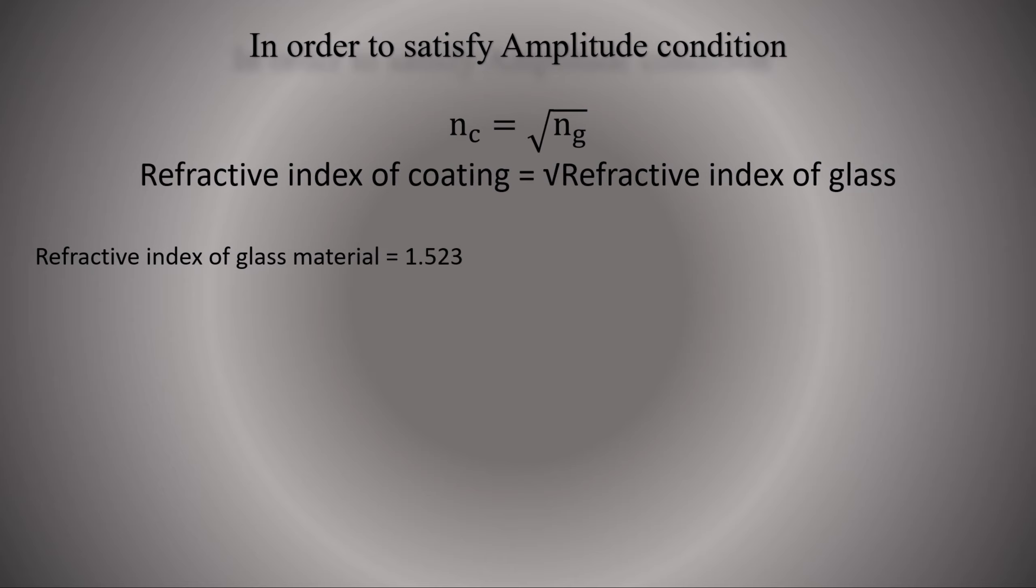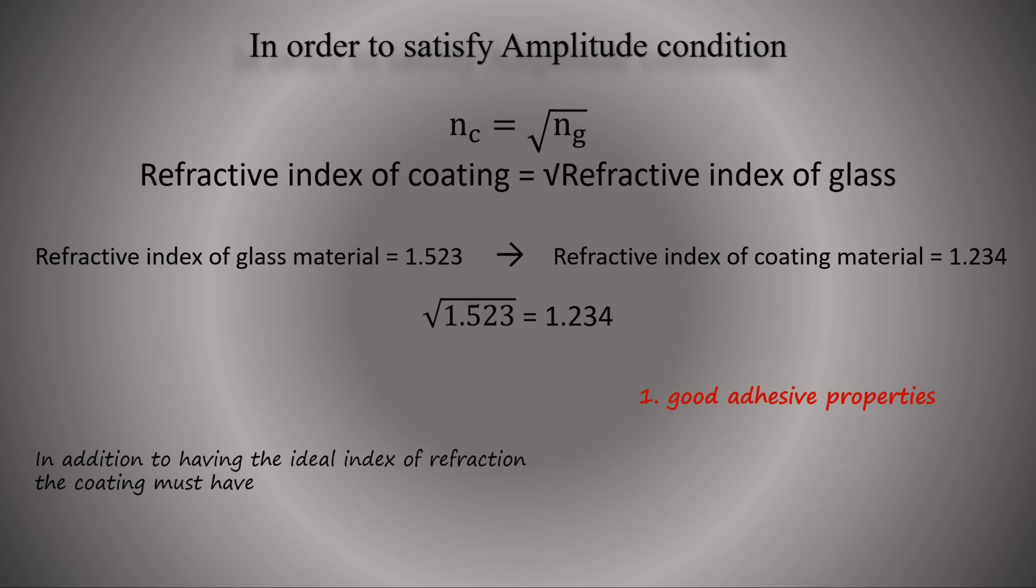To satisfy the amplitude condition, the index of refraction of the coating should be equal to the square root of the refractive index of the glass material. For example, if refractive index of glass material is 1.523 which is crown glass, then refractive index of coating material will be 1.234 which is square root of 1.523. In addition to having an ideal index of refraction, the coating must have good adhesive properties, must be sufficiently hard, and must be insoluble in water. Of the known materials having an index of refraction of 1.234, all are either too soft or too soluble in water.